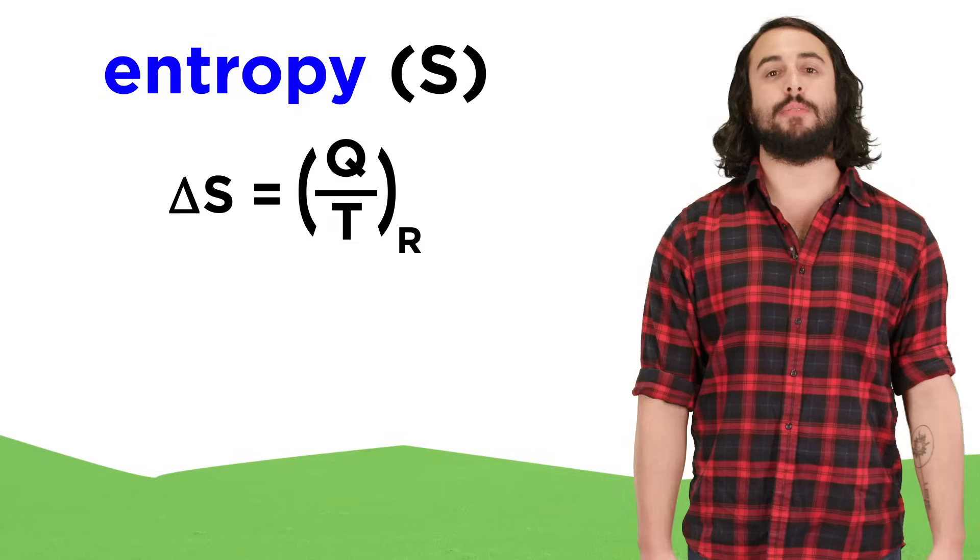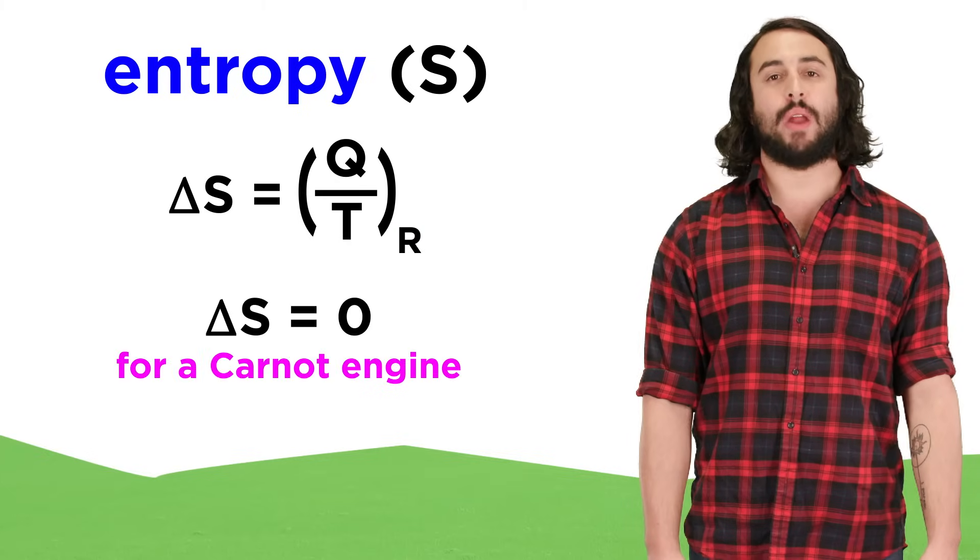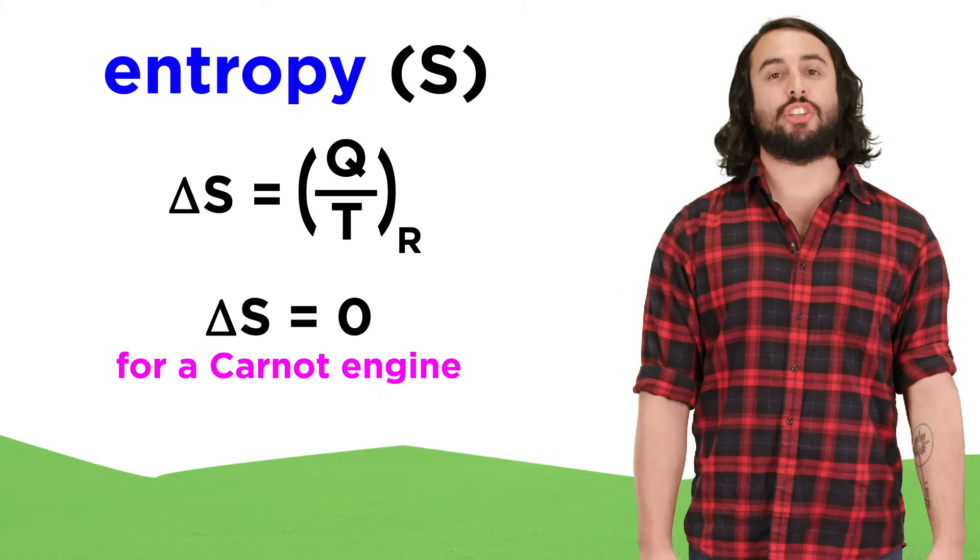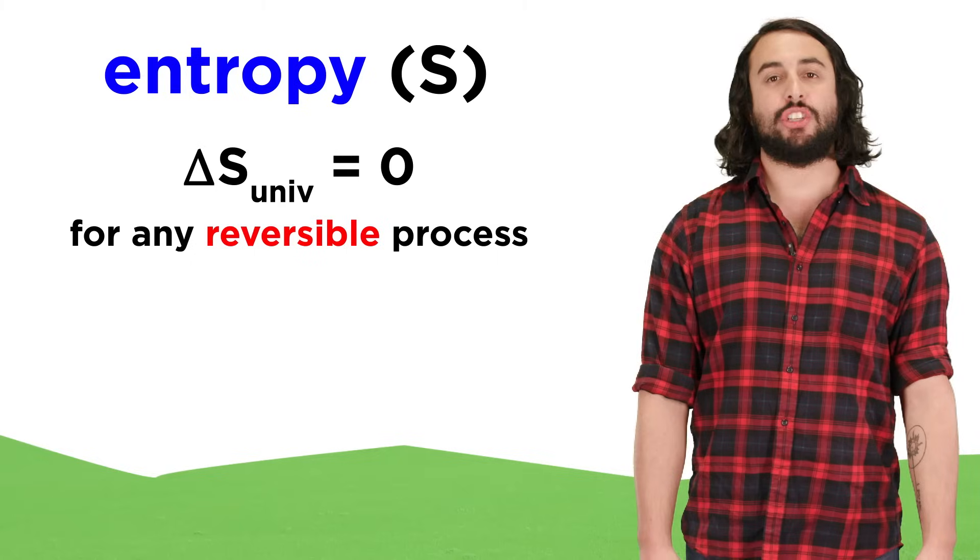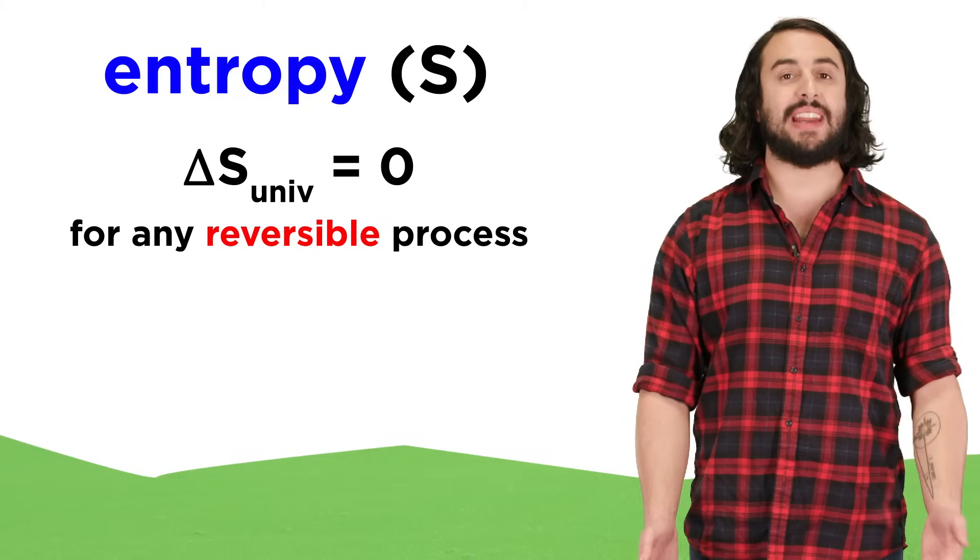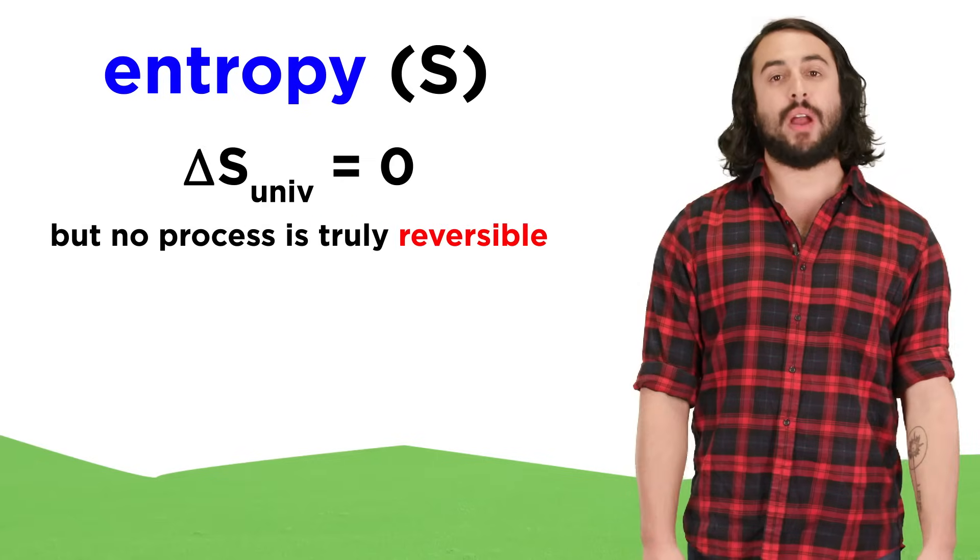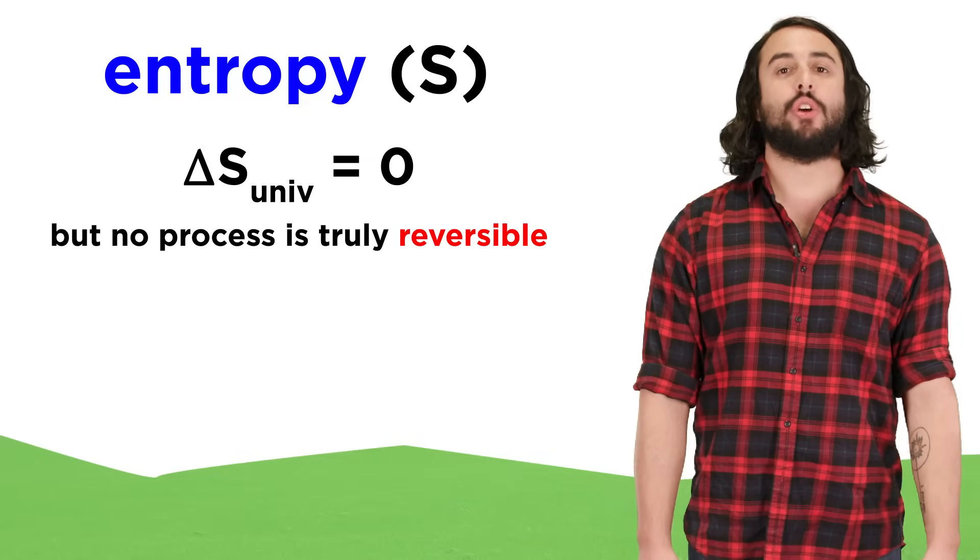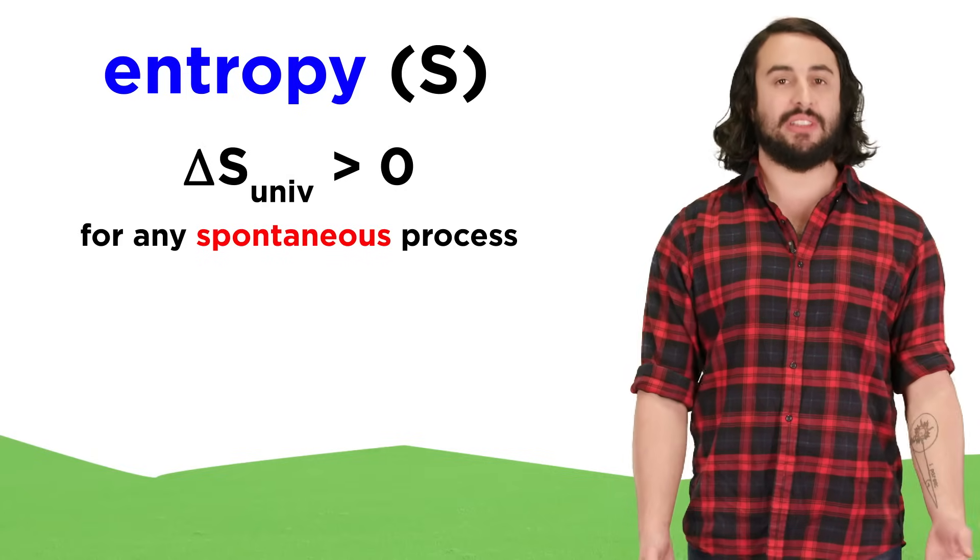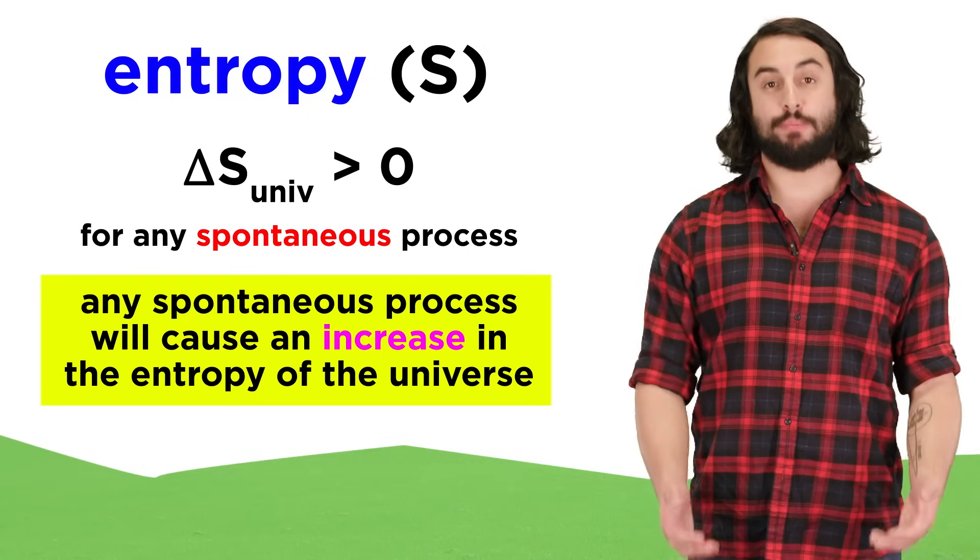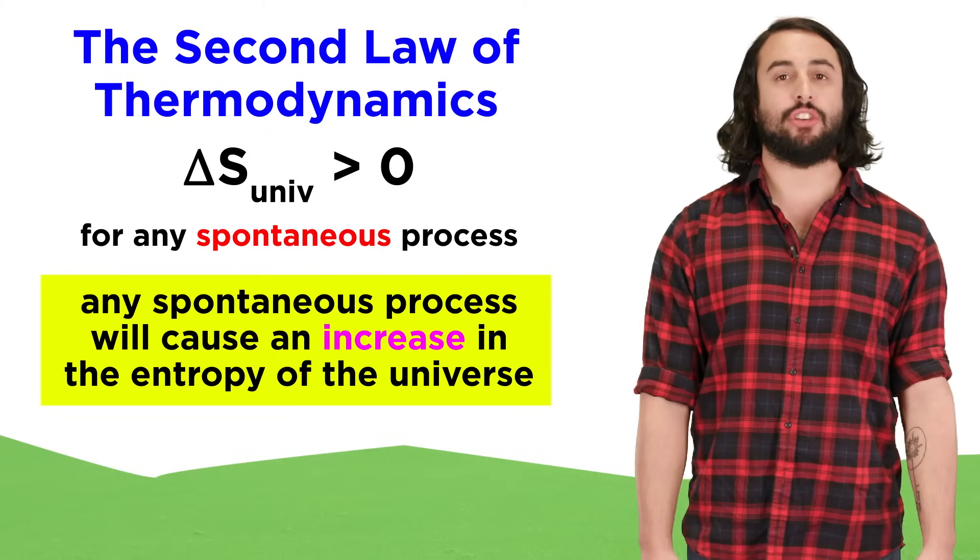The change in entropy is given by heat over the Kelvin temperature for a reversible process, and a mathematical ramification of this expression is that the change in entropy is zero for a Carnot engine. This can be extended to say that the change in entropy of the universe will be zero for any reversible process, where the universe is understood to mean the system plus the surroundings. However, no process is truly reversible, so we should rather say that the change in entropy of the universe for any spontaneous process will be greater than zero, or that for any spontaneous process the entropy of the universe is always increasing, which is another common articulation of the second law.